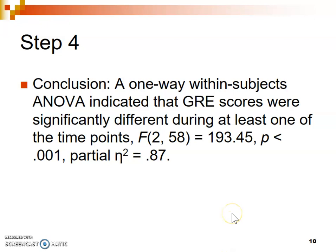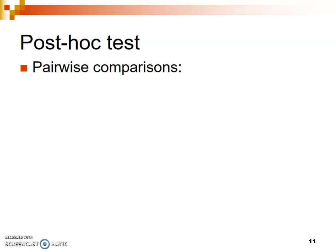Post hoc tests are used in ANOVAs whenever you have more than two levels that you're comparing. In this example we had three different time points, so we don't know which of those three is different and we need to do the post hoc tests. Post hoc tests involve comparing two pairs of means at a time — what's called pairwise comparisons. The easiest way to start is to write down all the pairwise comparisons you want to make in your dataset.